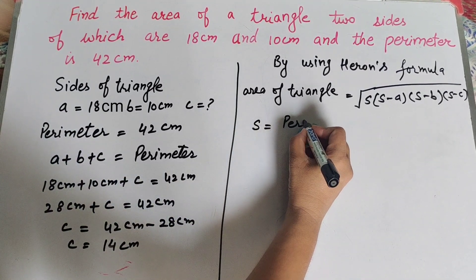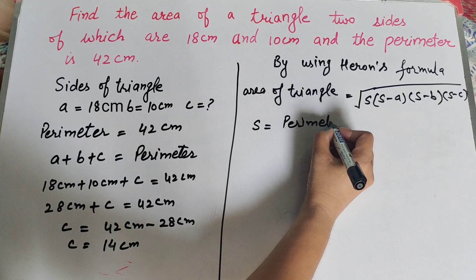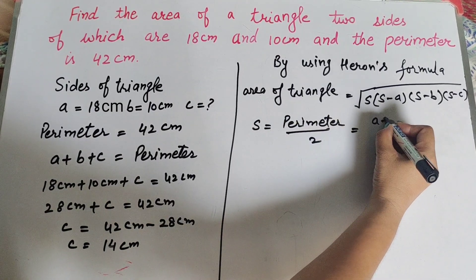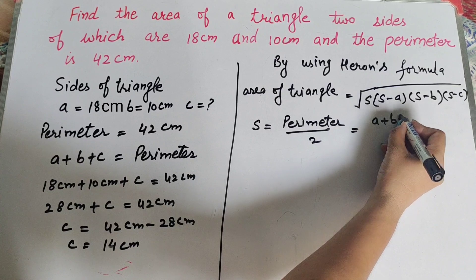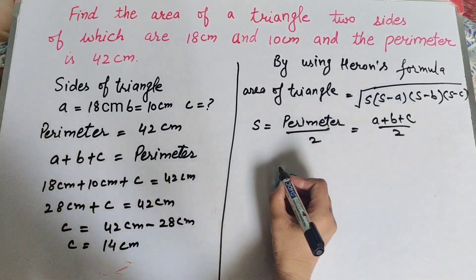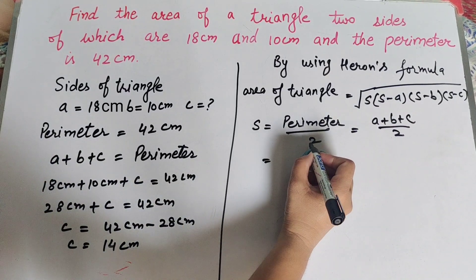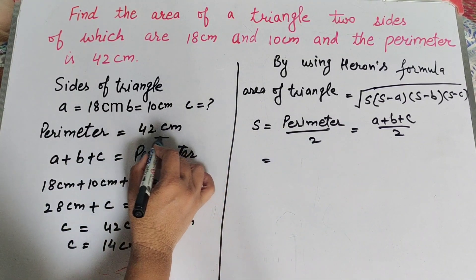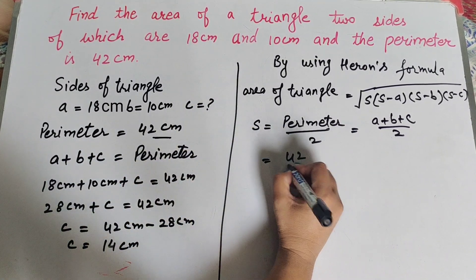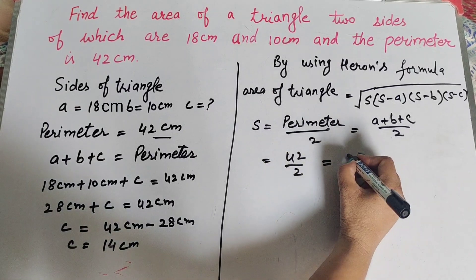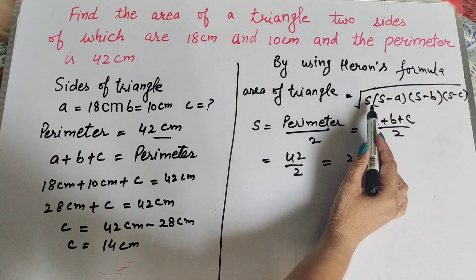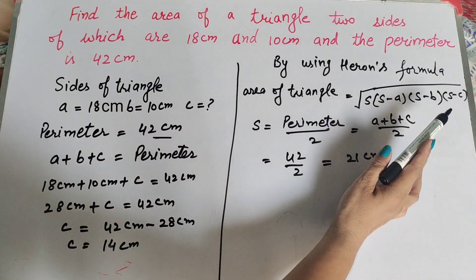The semi-perimeter s equals the perimeter divided by two. The perimeter is the sum of three sides divided by two. The perimeter is 42 centimeter, so s equals 42 divided by 2, which equals 21 centimeter. So the semi-perimeter s is equal to 21 centimeter.